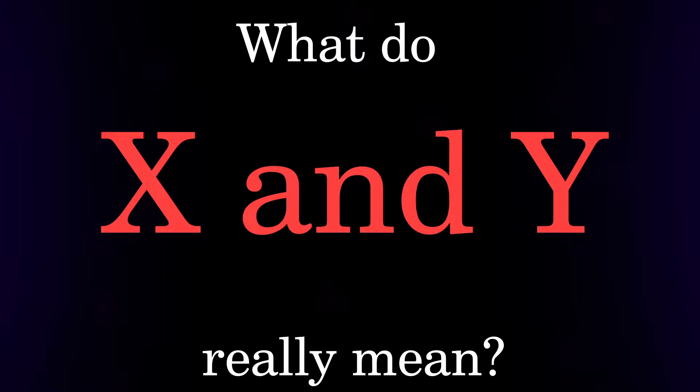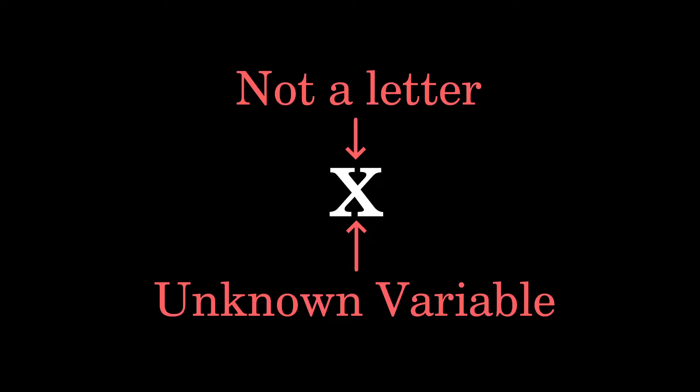Both X and Y mean similar things, but we'll focus on X for now. X is the 24th letter of the English alphabet, but is it the 24th letter of the math alphabet? No. So what is X? Well in short, X is not a letter, but instead a number that we simply don't know the value of. It is an unknown value. In math we call that a variable.